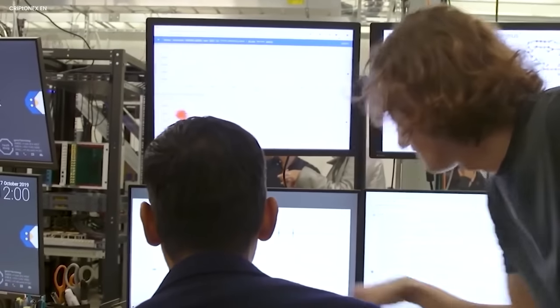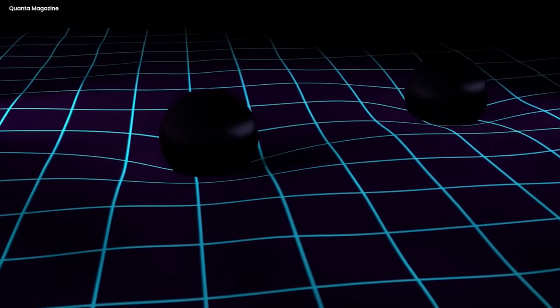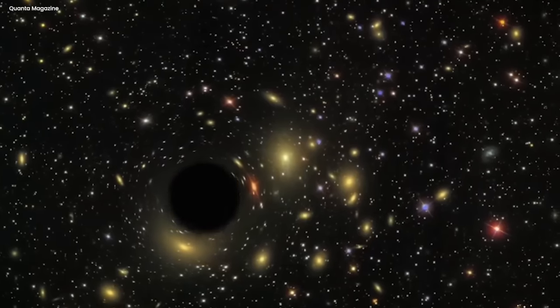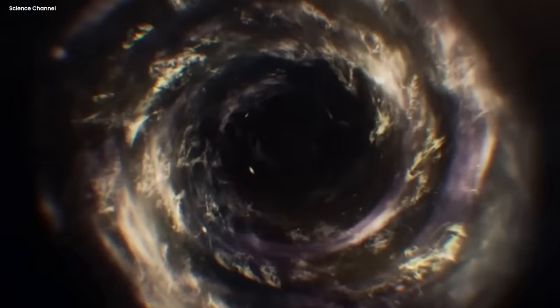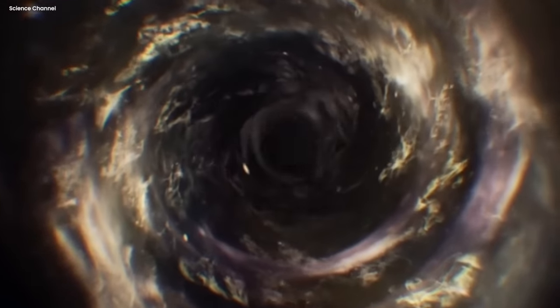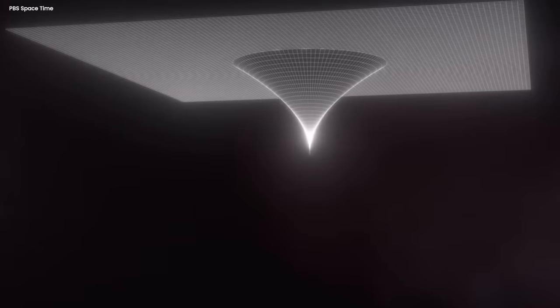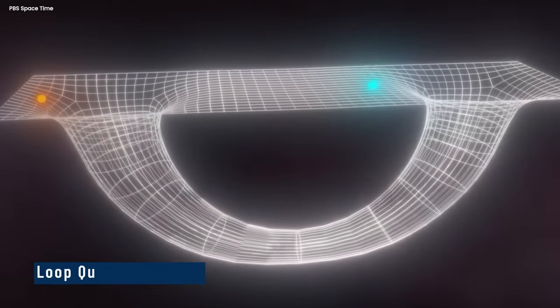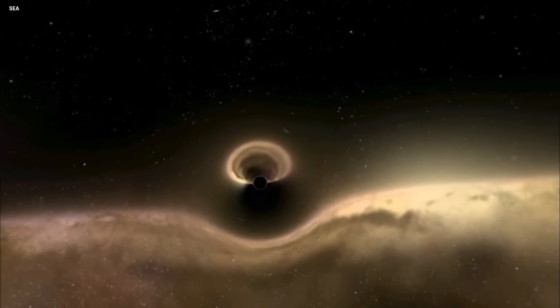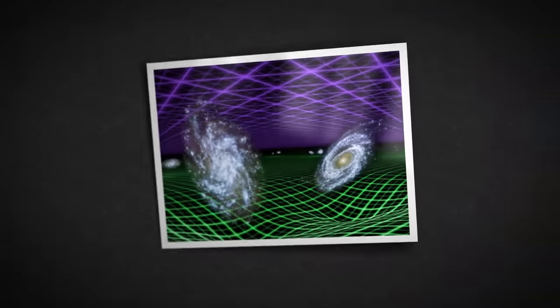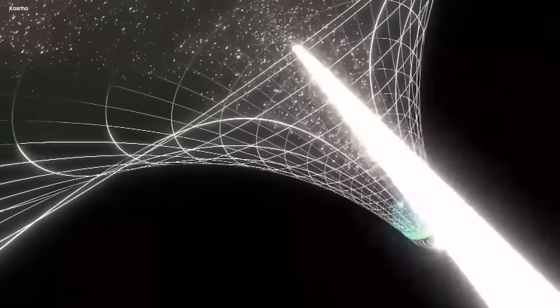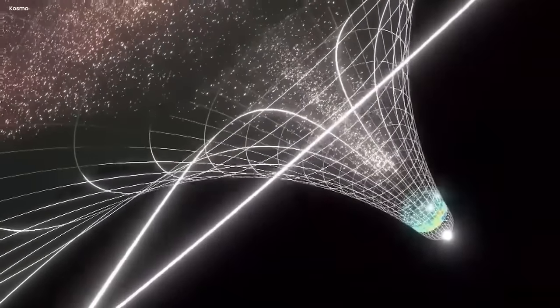This provides us with some clarity. Quantum gravity seeks to provide a framework that accounts for the behavior of spacetime on both cosmic and subatomic scales. Such a theory could offer valuable insights into the nature of singularities and the fundamental workings of the universe. One approach to addressing the singularity issue is the theory of loop quantum gravity. This theory poses that at incredibly small scales, spacetime is quantized, meaning it is composed of discrete, indivisible units. These fundamental units are often termed loops or spin networks.